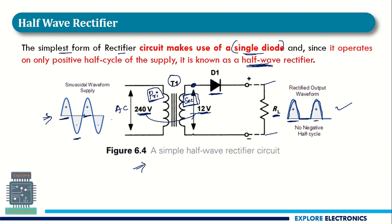Once the 12-volt AC is available, in the positive half cycle the diode conducts, so we get the positive half cycle as output across RL. When the negative half cycle is applied, the diode does not conduct, so the output is zero.